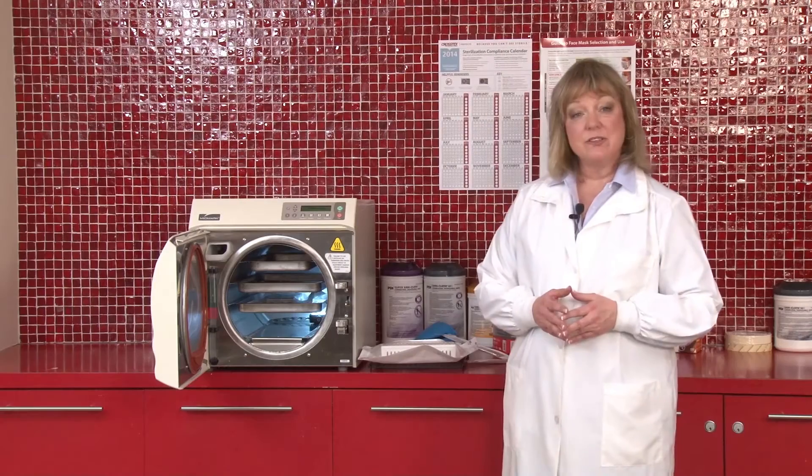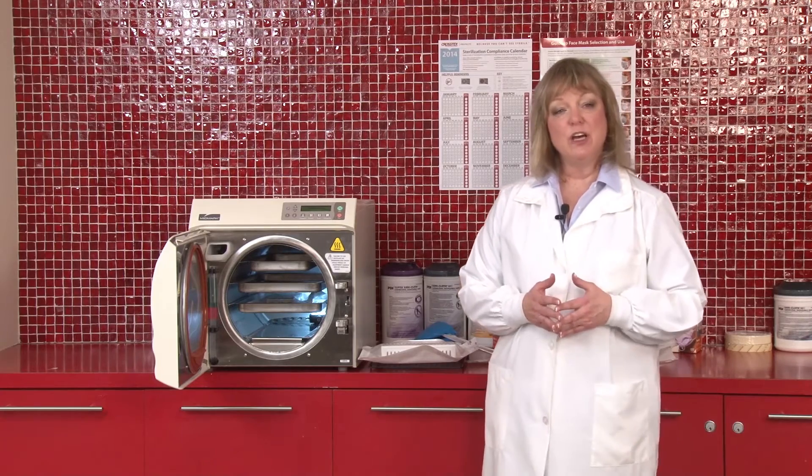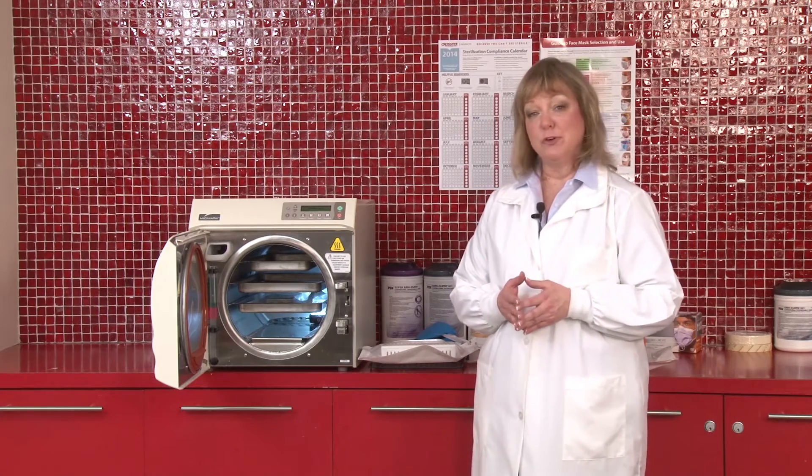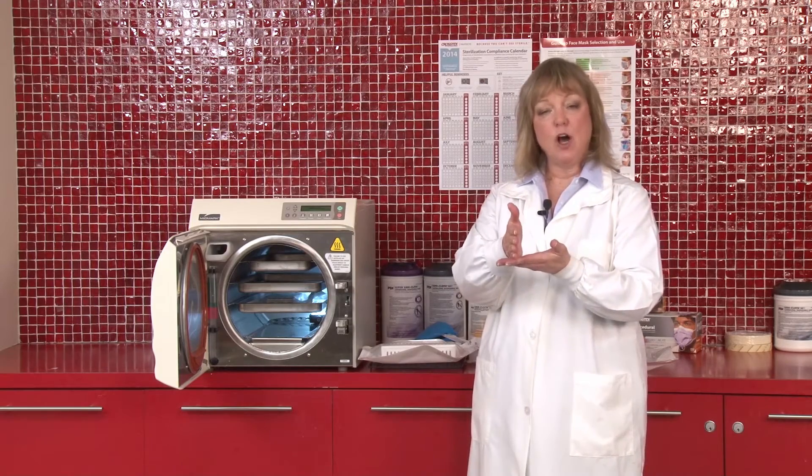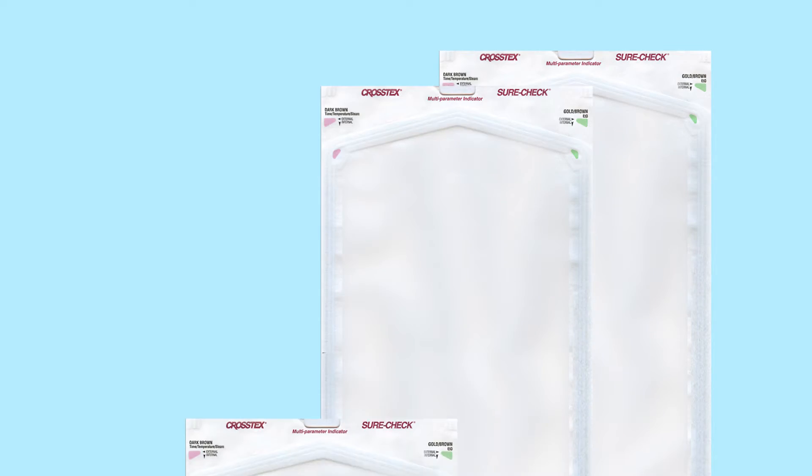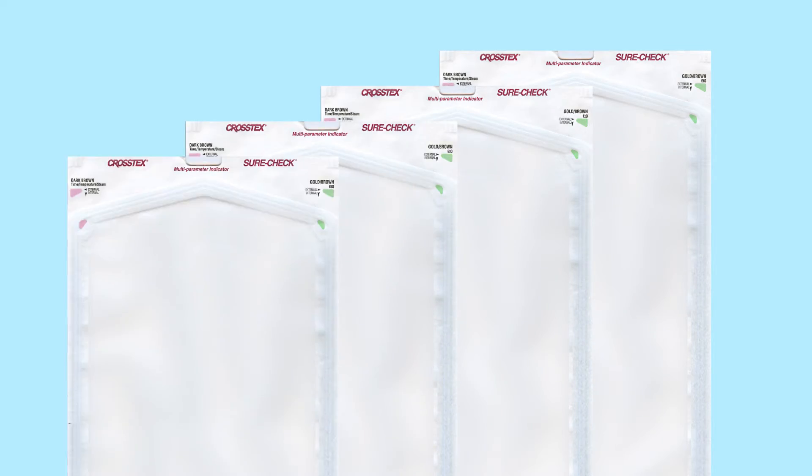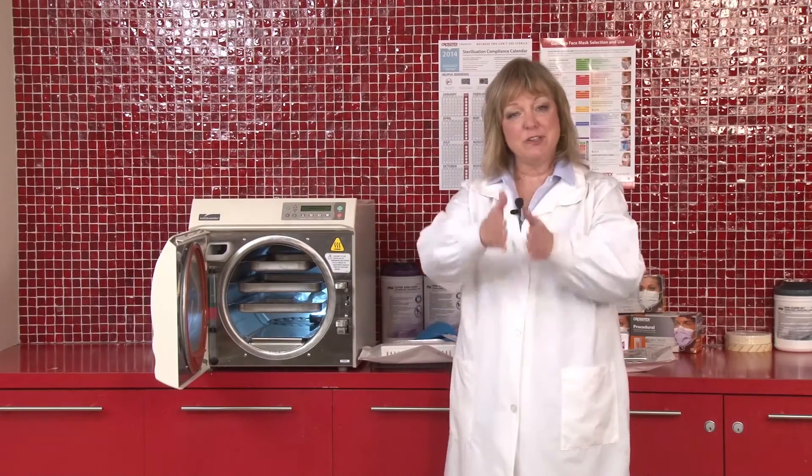If you are using racks inside your sterilizer, this is going to help you so that you can actually do what's a preferred vertical loading. If you place the pouches on edge, almost like books on a shelf, plastic front to the paper back, that's going to allow the steam to penetrate 360 degrees around the pack, again to ensure sterilization.